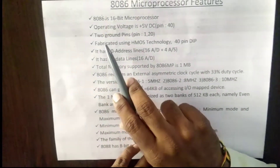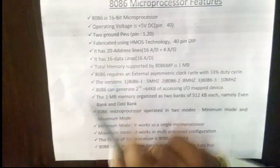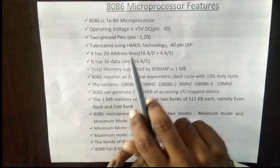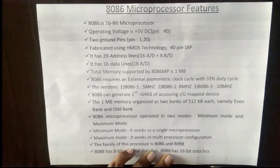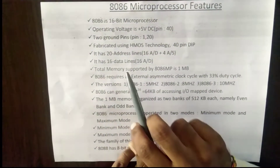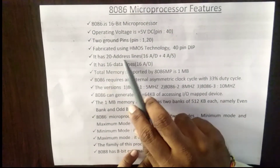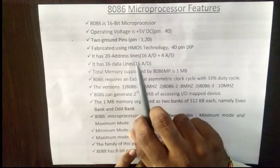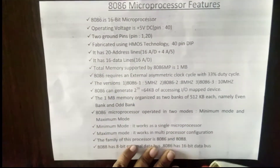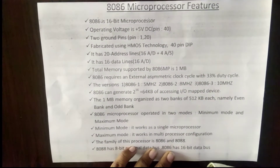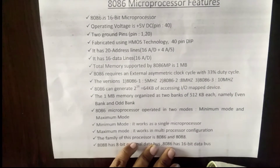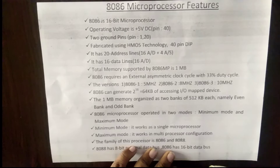There are two ground pins — pin number 1 and pin number 20. The 8086 microprocessor is fabricated using HMOS technology, which stands for High Density Metal Oxide Semiconductor technology.